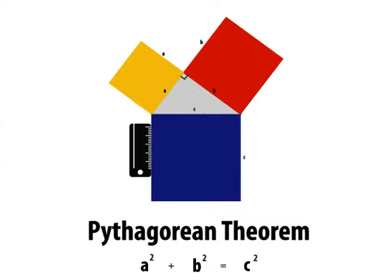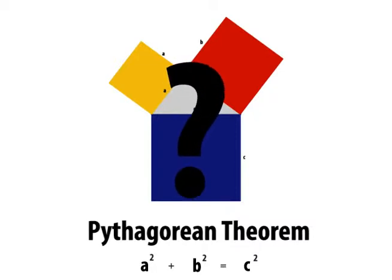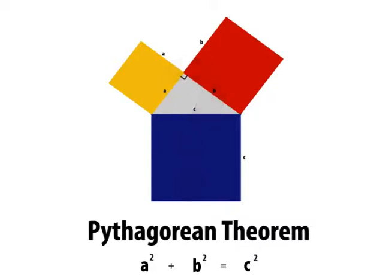Anyone can take simple measurements to verify this fact, and most well-educated people know this to be true. But why is it true? How can we be sure that this holds for every right triangle? Well, we have to prove it.